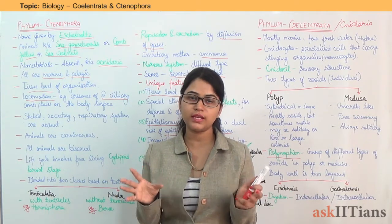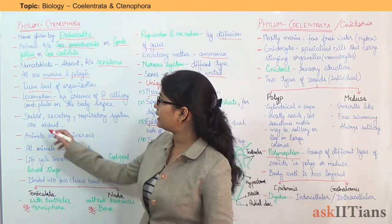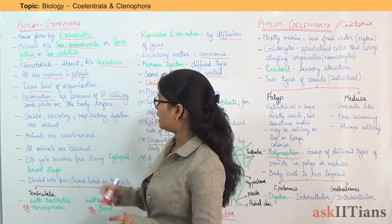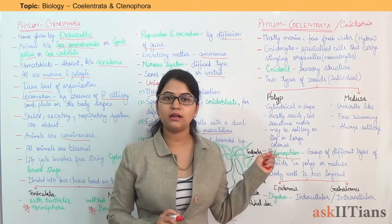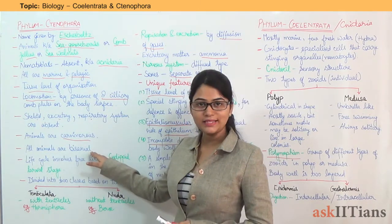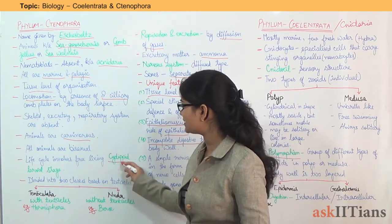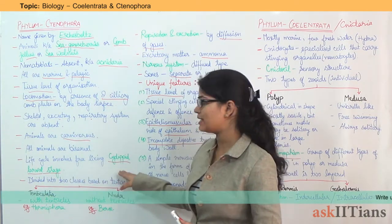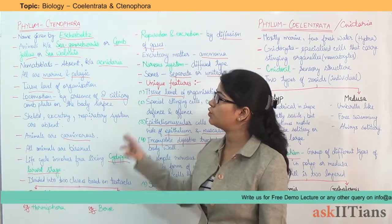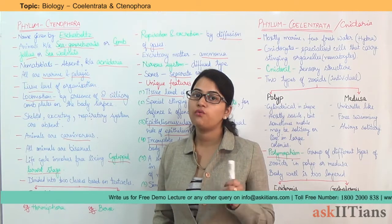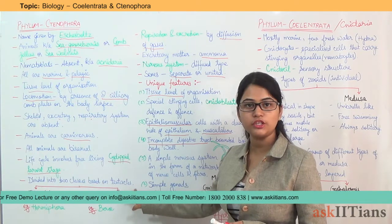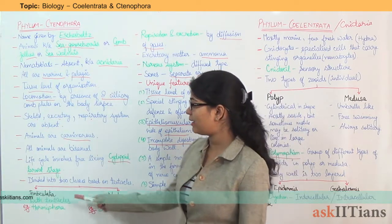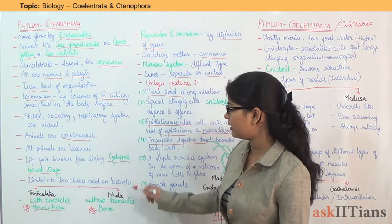Skeletal system, excretory system, and respiratory system are all absent. Animals are coelomate. All animals are bisexual. The life cycle involves a free-swimming larval stage. Ctenophora is divided into two classes based on tentacles: Tentaculata, which have tentacles — example Hormiphora — and Nuda, which have no tentacles — example Beroe.